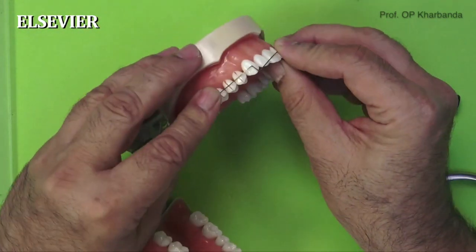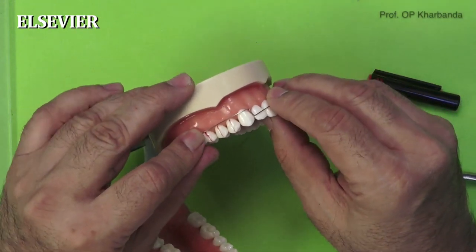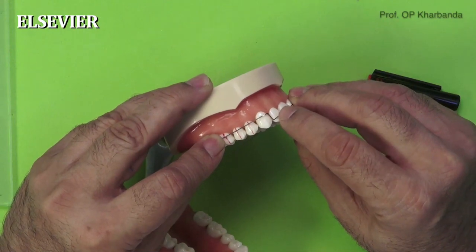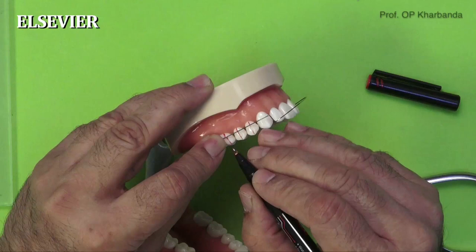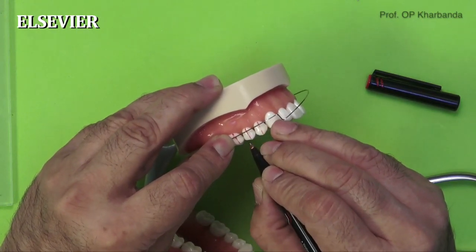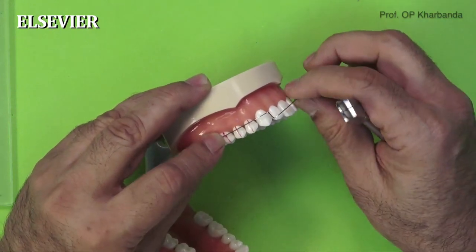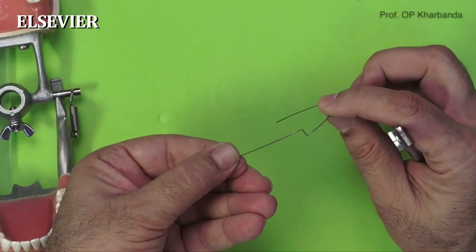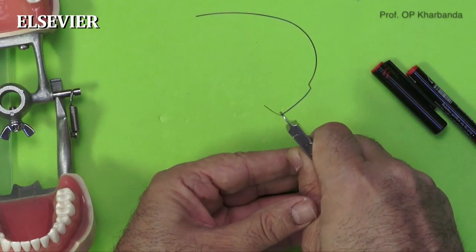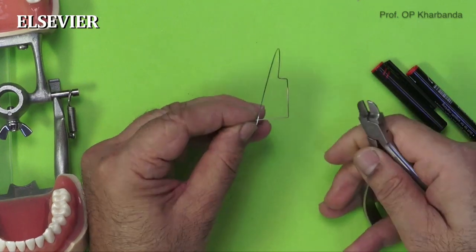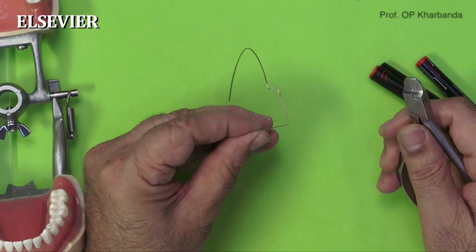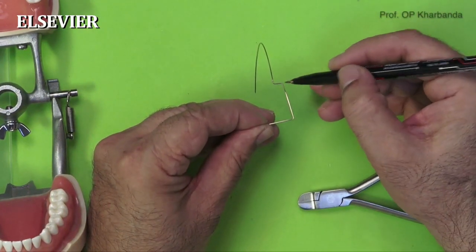The second marking is to mark mesial to the first molar. This is done by holding the wire in its appropriate place with the mesial arm at the contact point between the central and lateral. Mark about two to two and a half millimeters forward from the mesial margin of the buccal tube, which usually falls between the contact point of the second premolar and the first molar. This is the site for your second bend. Once completed, try to make these two arms parallel.